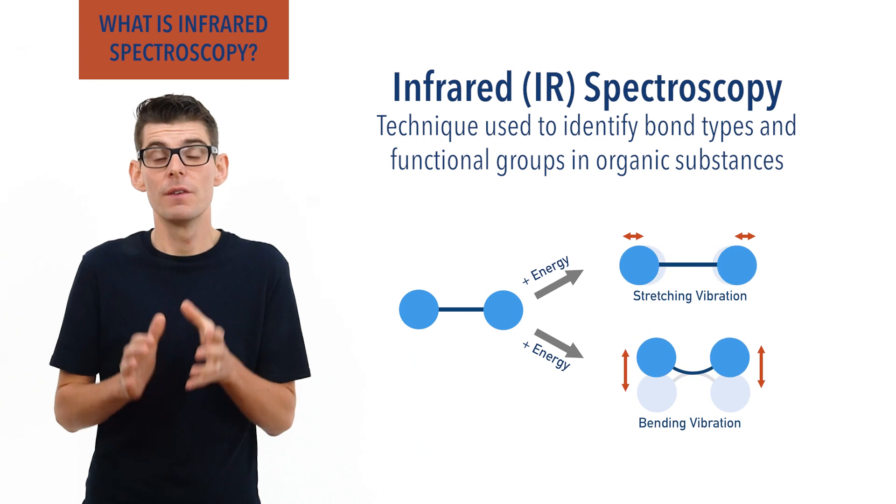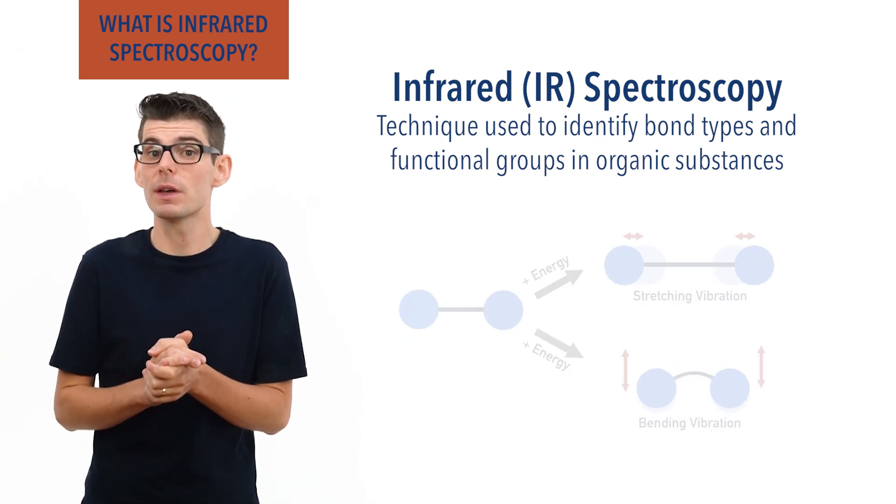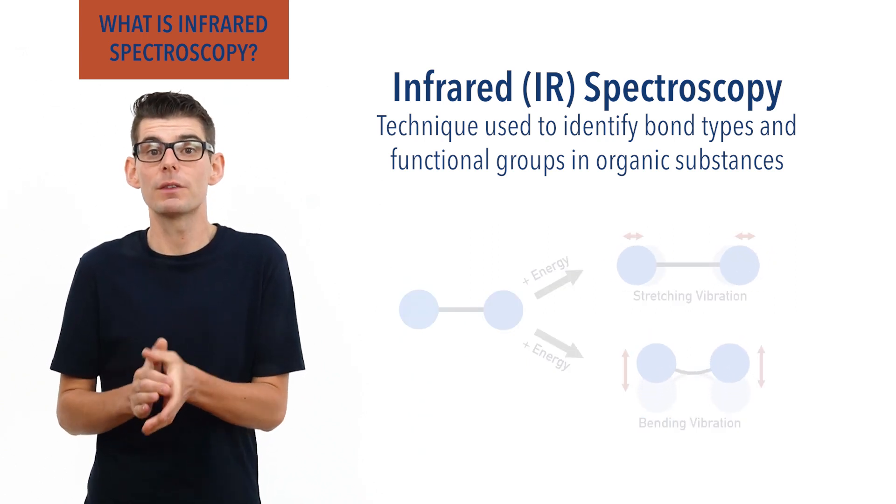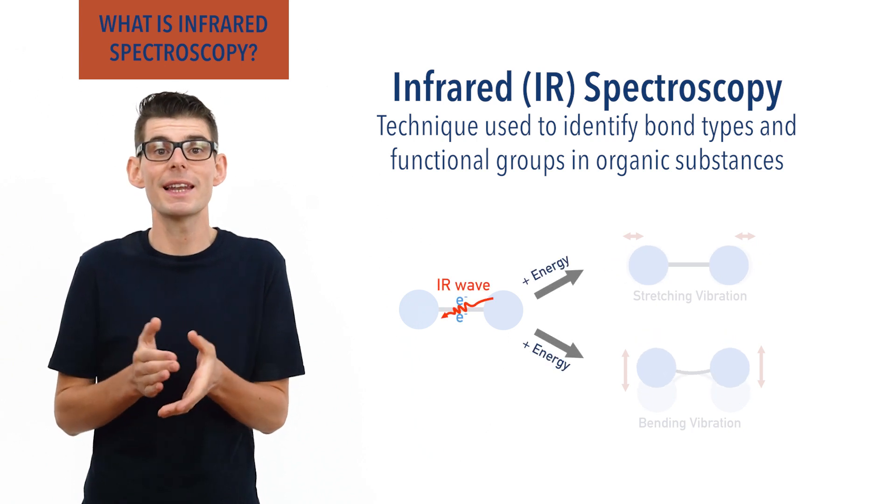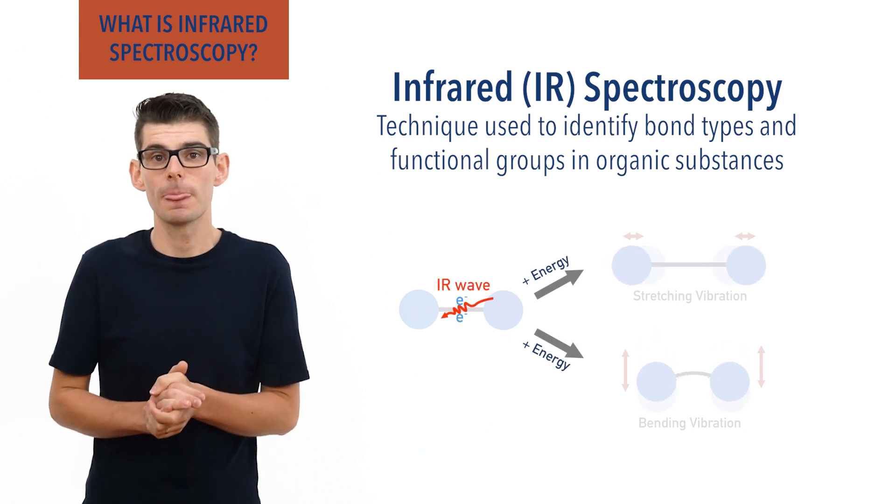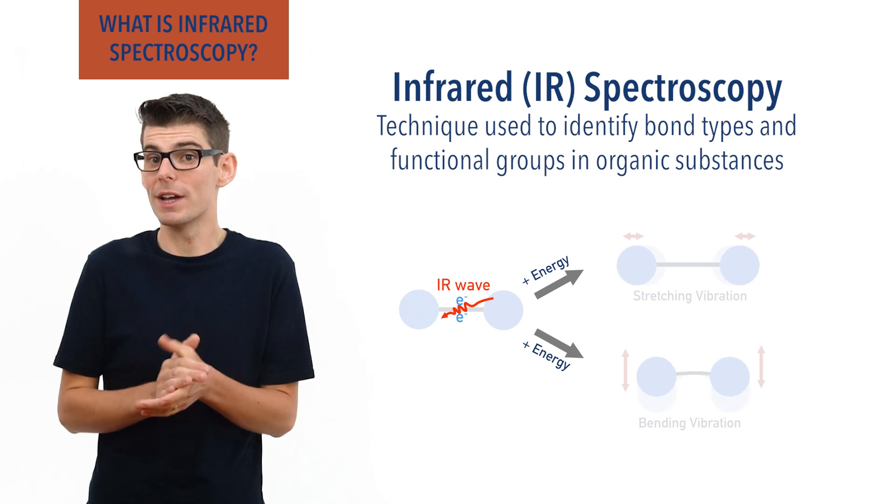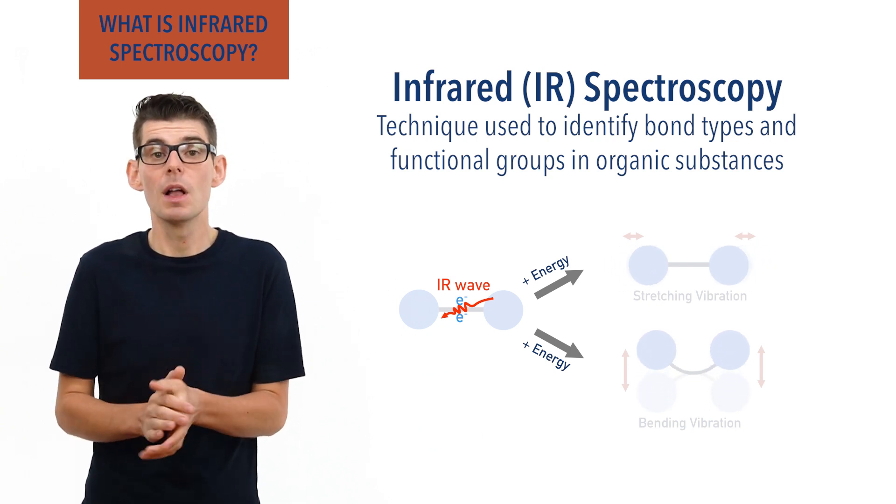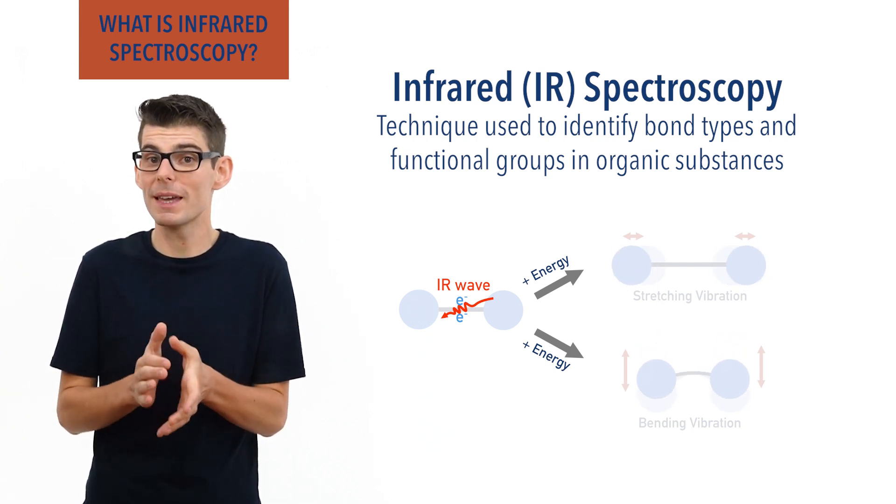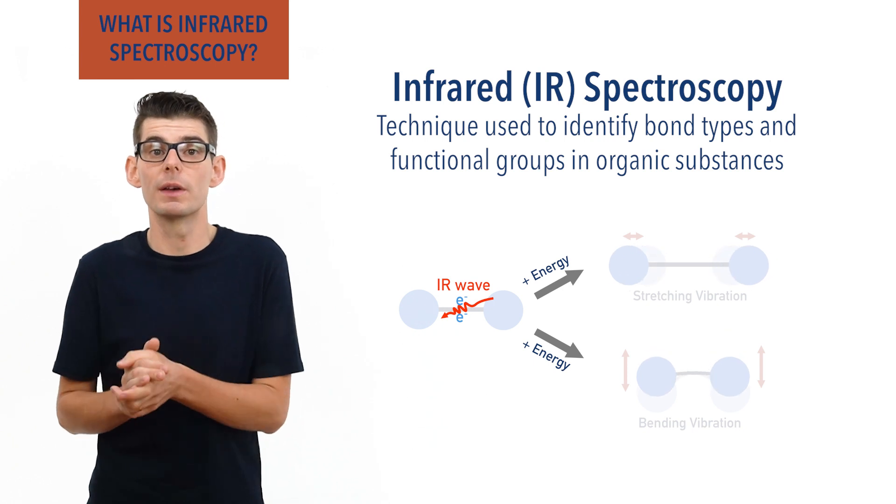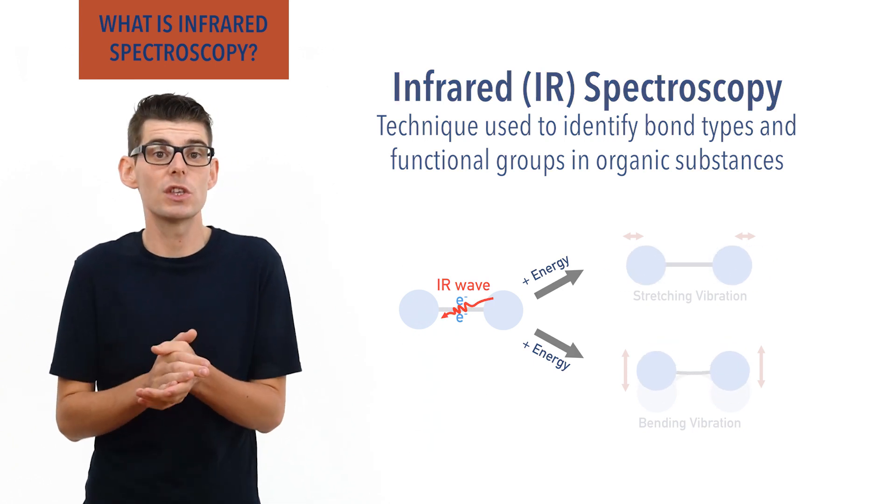For most organic molecules, the bonds in them can be made to vibrate using energy found from the infrared region of the electromagnetic spectrum. This means if a specific wave of IR radiation is shown at a sample, the corresponding bond type in the sample can start to vibrate by absorbing the energy from the wave.